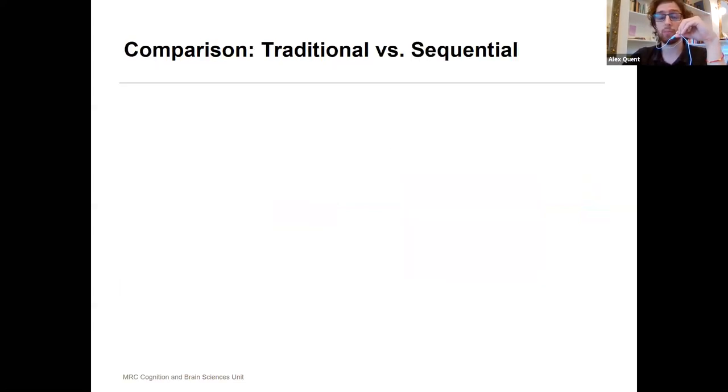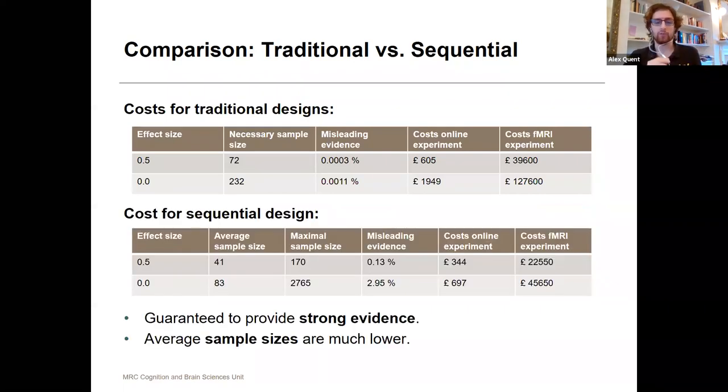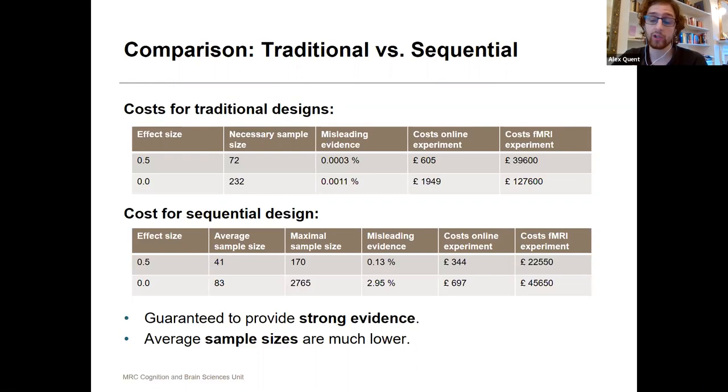than for a traditional fixed-n design. So if we directly compare these two approaches, instead of always testing 200 participants or over that, we only need to do 80, which cuts the research costs on average by half. But at the same time, you're providing the same level of evidence, so it's not always needed to provide that many participants.